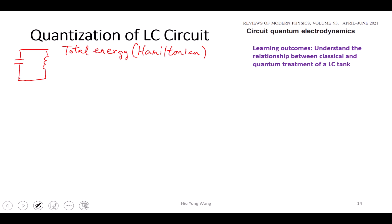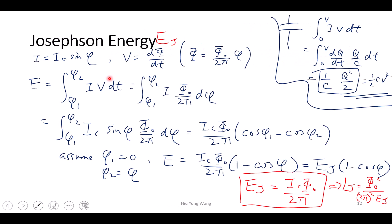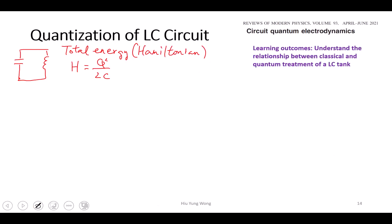I don't know if you remember, but it's equal to Q squared divided by 2C. Remember this? Q squared divided by 2C. That's classically.